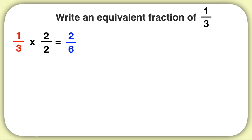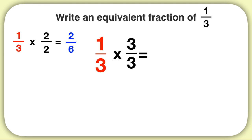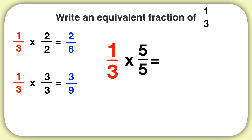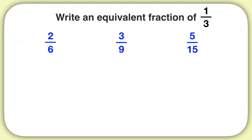We could also take 1 third and multiply by 3 over 3. 1 times 3 is 3, and 3 times 3 is 9. This is the equivalent fraction 3 ninths. You can multiply by any number as long as both the numerator and denominator are multiplied by the same thing. For example, 1 third times 5 over 5 gives you 1 times 5 is 5, and 3 times 5 is 15. Here are three equivalent fractions we have found of 1 third.